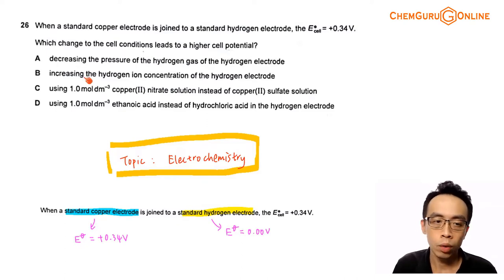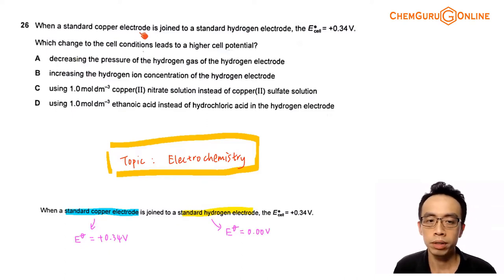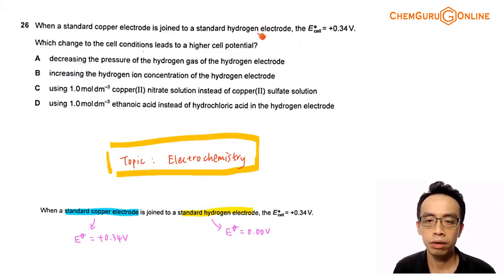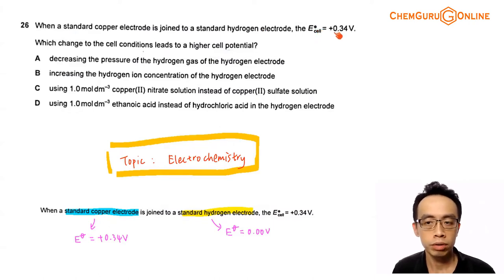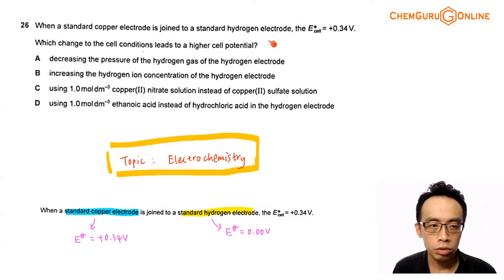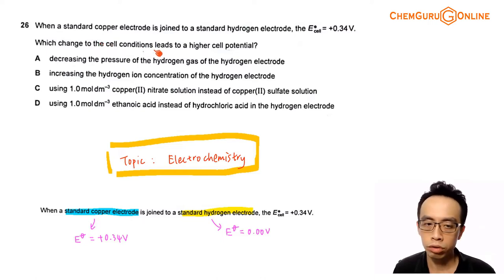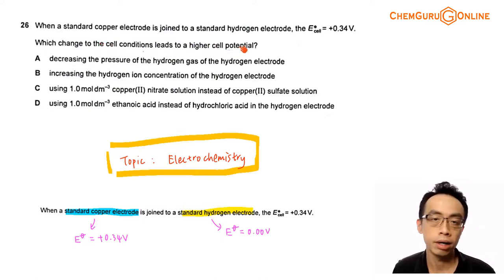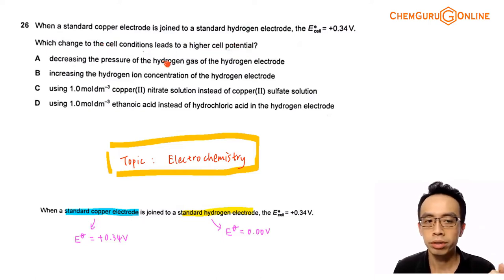Question 26: when a standard copper electrode is joined to a standard hydrogen electrode, the E cell is positive 0.34 volt. Which change to the cell conditions leads to a higher cell potential? We have four options.